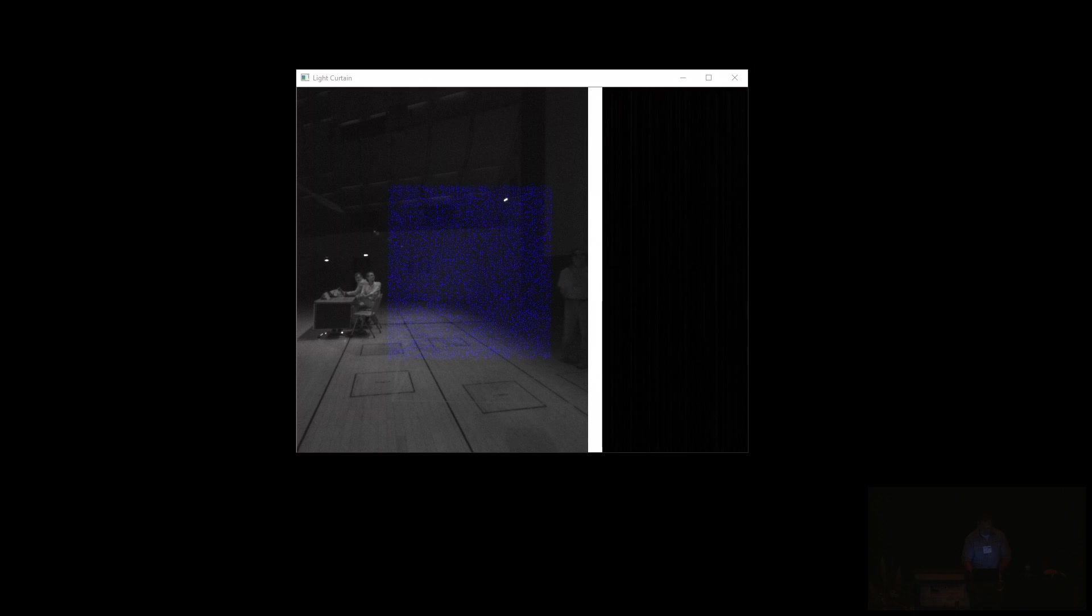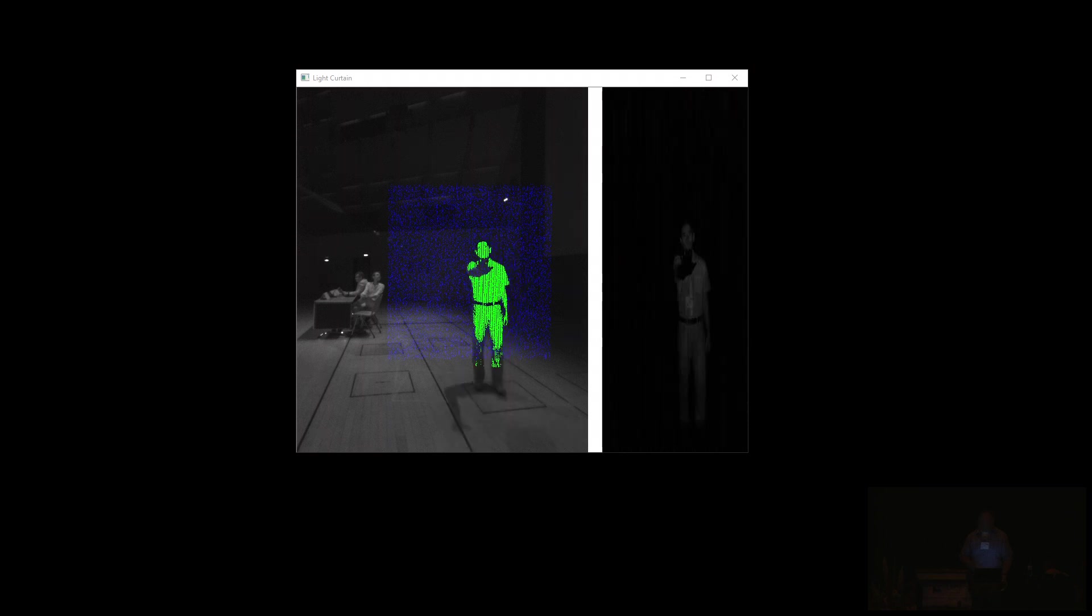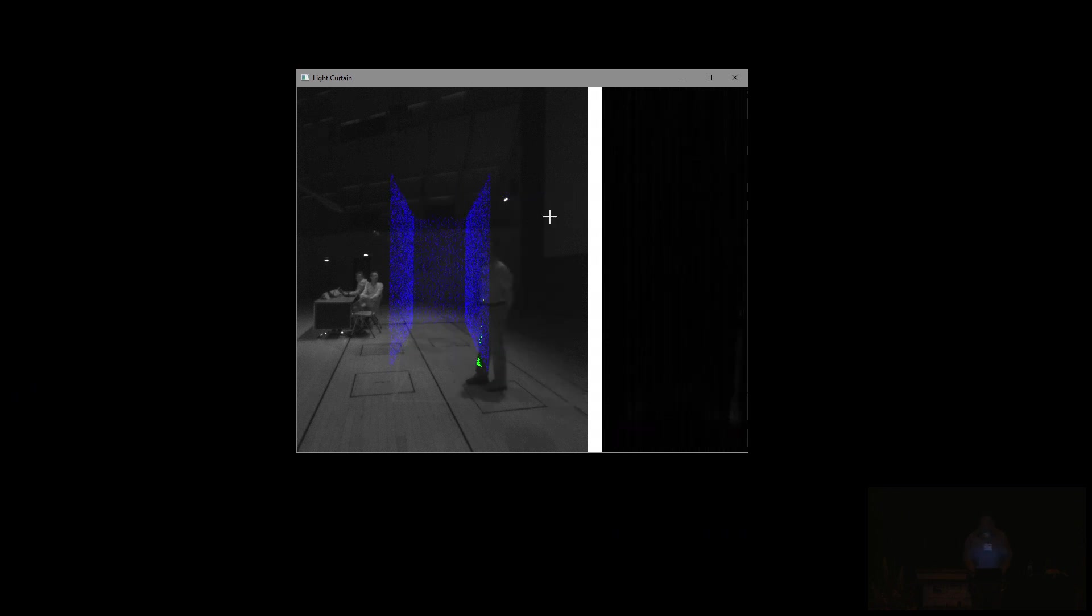All right. So this here is a planar light curtain. This is like a normal light curtain found in elevators. Robert can put his hand into the curtain. He can move in and out and along the curtain. And it still detects him.